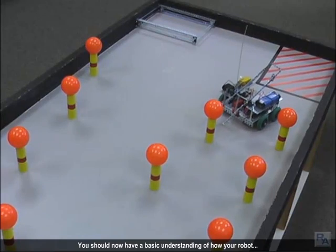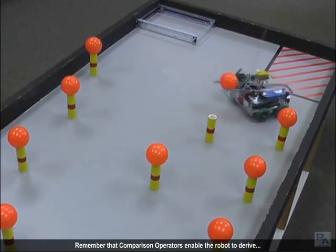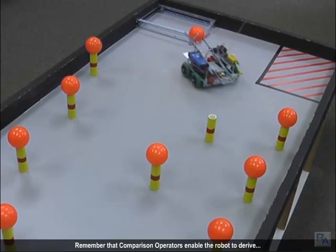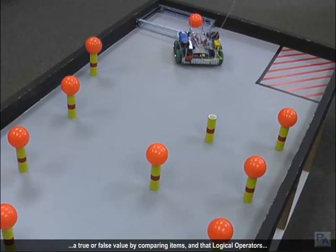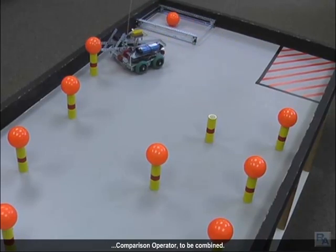You should now have a basic understanding of how your robot makes decisions based on Boolean logic. Remember that comparison operators enable the robot to derive a true or false value by comparing items, and that logical operators allow multiple conditions, each with their own comparison operator, to be combined.